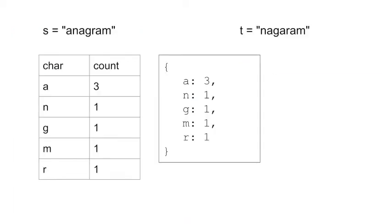This is the way you'd want to mentally visualize it. If we're concerned about the occurrence of the characters, we need to create a map — a map that maps the letter to the occurrence. On the left-hand side, for S with the word anagram, we know that A occurs three times, N occurs once, G once, and so on. Now we need to compare that to T.